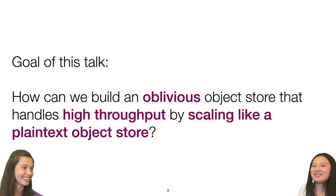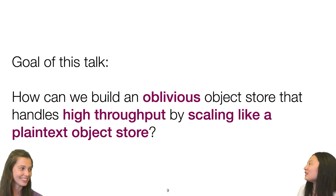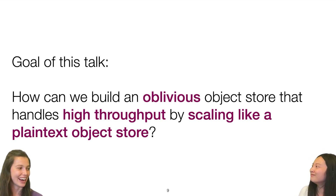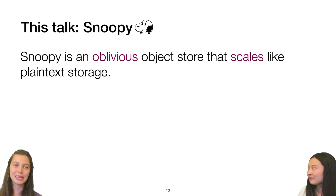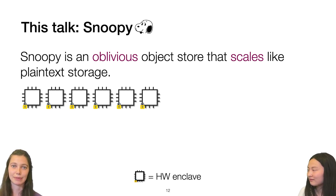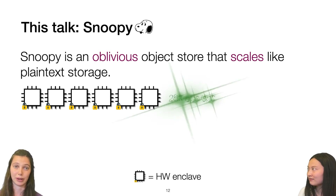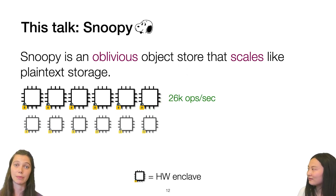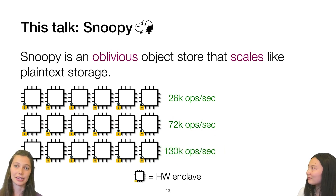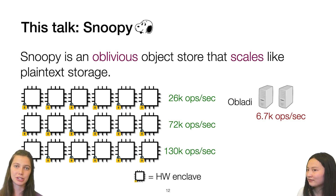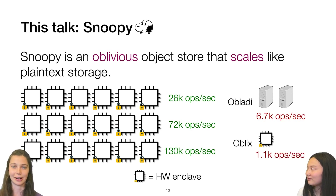This leads us to the question: how do we build an oblivious object store that handles high throughput but also scales like a plaintext object store? We introduce Snoopy — Scalable Nodes for Oblivious Object Repository — an oblivious object store that scales like plaintext storage. Snoopy uses hardware enclaves, and with six hardware enclaves we achieve a throughput of around 26,000 requests per second, increasing as we add more enclaves. This contrasts with prior work like Obladi, which can't scale beyond two machines, and Oblix, which can't scale beyond a single hardware enclave.